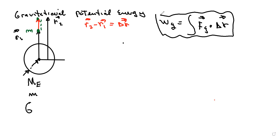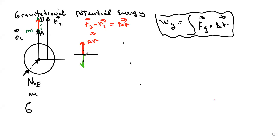Let's do a free body diagram. If we're going to take the particle of mass m from point A to point B, we have delta r as a vector, and the force of gravity pointing the opposite direction — there are 180 degrees between the two vectors.